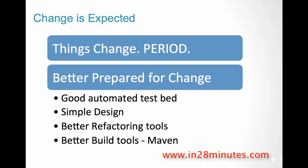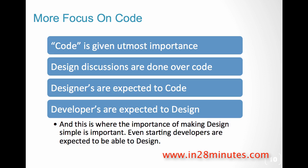Have simple design — don't make it overly complex. Make use of refactoring tools. Code is given utmost importance. Whenever discussing design, pull up some code and discuss it — code is the universal truth, the ultimate truth. Designers are expected to code; it's an attitude. There's no separation between designers and programmers. Everybody is expected to code and design, and even architects are expected to be hands-on.